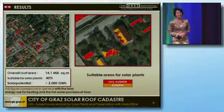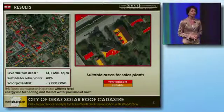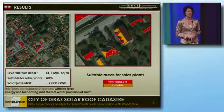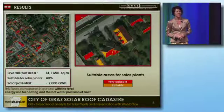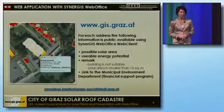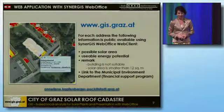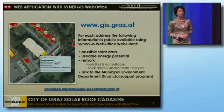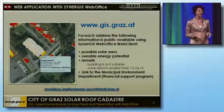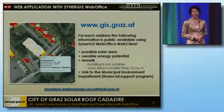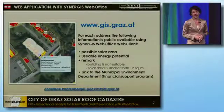Since the beginning of this year, you can find the solar roof cadastre of the city of Graz at www.gis.graz.at. The web client allows the public to search for their home address and get all information about possible solar area, the usable energy potential, and also links to necessary information on funding and consulting. Thank you for your attention.